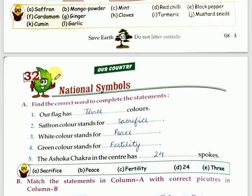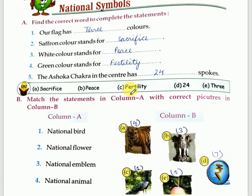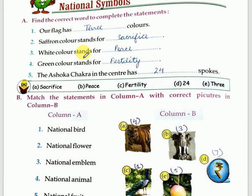Next chapter is chapter number 32 and the name of the chapter is National Symbols. This chapter, children, you have studied in SST also — it is chapter number 12 there. It is a very easy chapter, so let us revise what you have studied in SST.